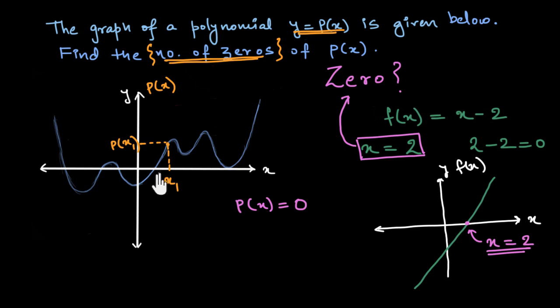In other words, what are those points where the graph of the polynomial p of x intersects or touches the x-axis? Because for those points the y-coordinate will be 0, and hence those x-coordinates would be our zeros of the polynomial. Let us mark those points here.